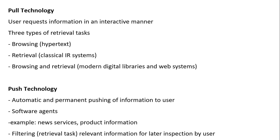User tasks also involve pull technology and push technology. In pull technology, the user explicitly requests information from an information system interactively — tasks include browsing, retrieval, or both. In push technology, the user does not explicitly request information; instead, software agents push information automatically to the user, for example news services and product information. The user then decides whether to check, read, or ignore that information.